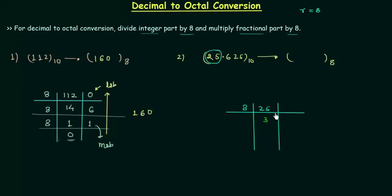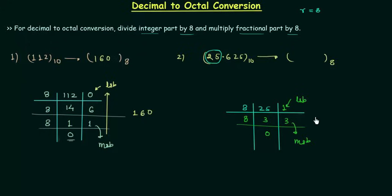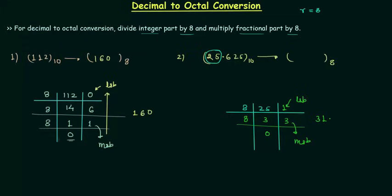The remainder is 1. We will again divide 3 by 8: quotient is 0 and remainder is 3. This 3 is the MSB and this 1 is the LSB, so the integer part for the octal number is 31. Now we have to find out the fractional part for the octal number.